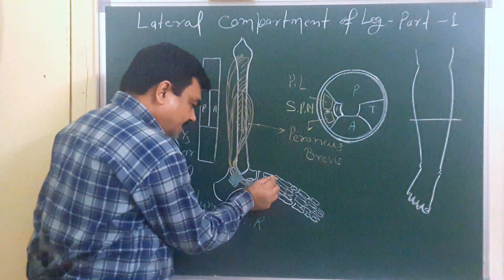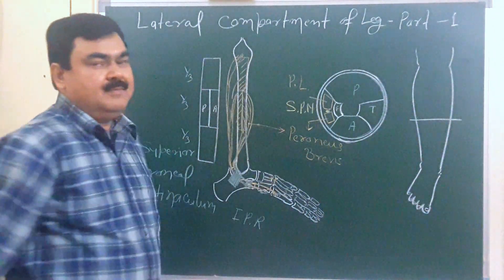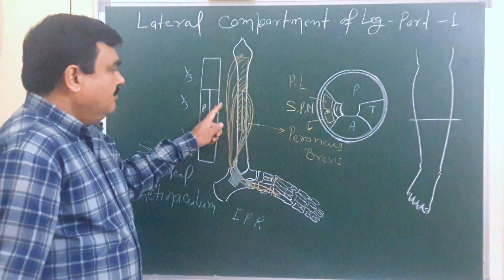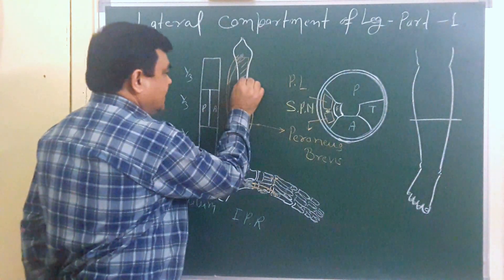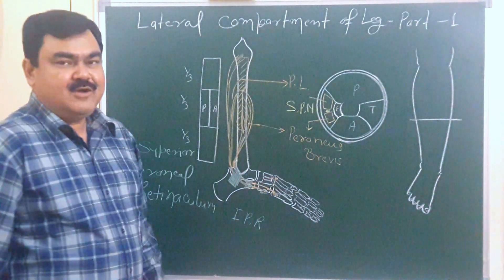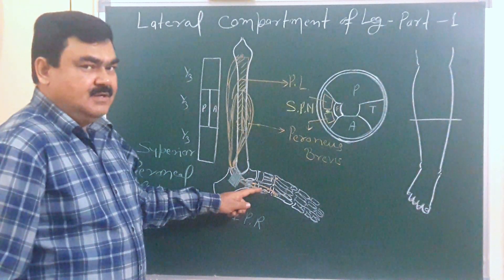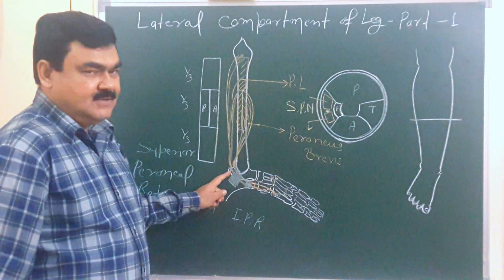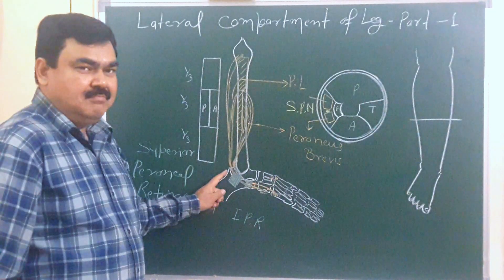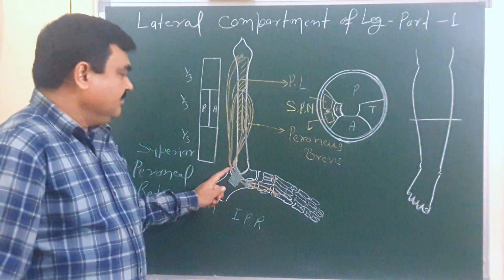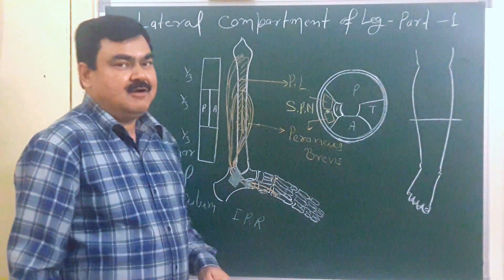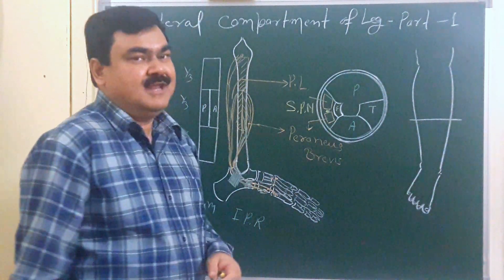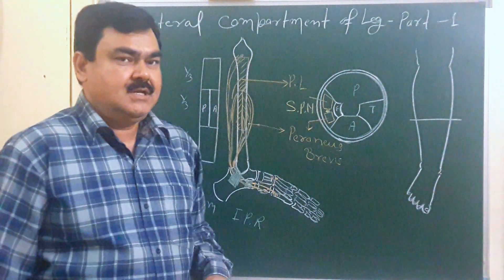After reaching the sole, the tendon of peroneus longus is inserted onto the inferior surface of the base of the first metatarsal, with some part also inserted into the medial cuneiform. The action of peroneus longus is also eversion and plantar flexion — it is a powerful everter and a weak plantar flexor.